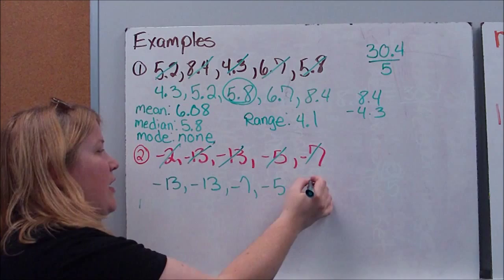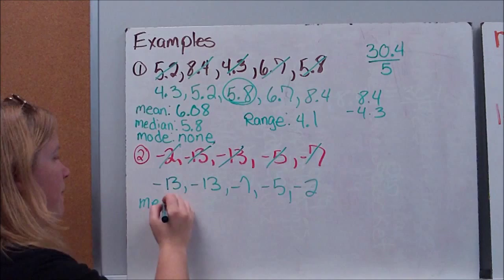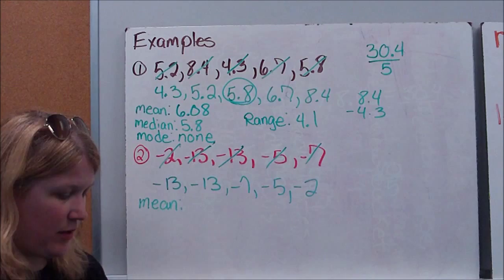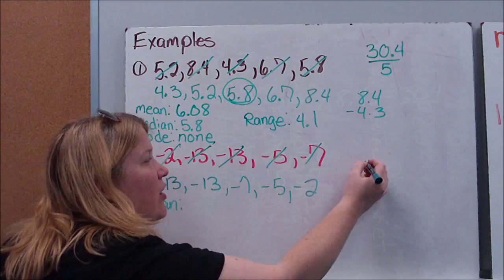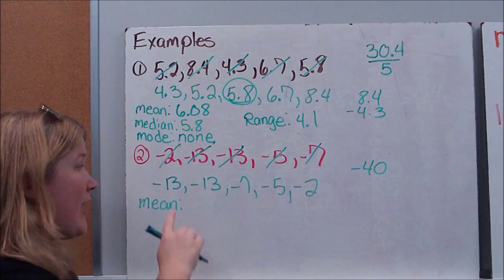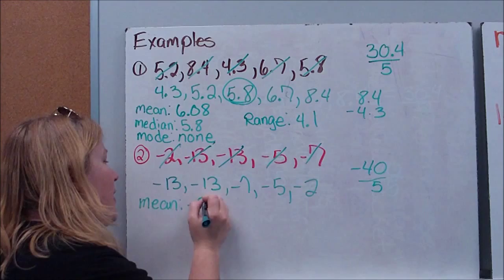So the first thing I want to calculate is our mean, which is our average. So I'm going to start by adding up each of my numbers. When I add all of these up together, I get a negative 40. Then remember, I'm going to divide by 5 because that's how many numbers I had, 1, 2, 3, 4, 5. And when I do that, I find that my mean or my statistical average is negative 8.